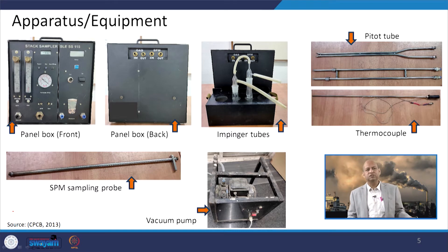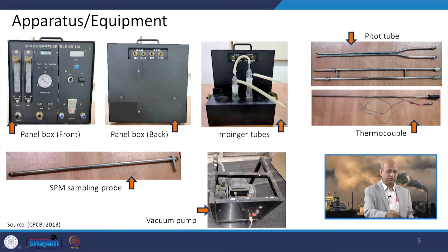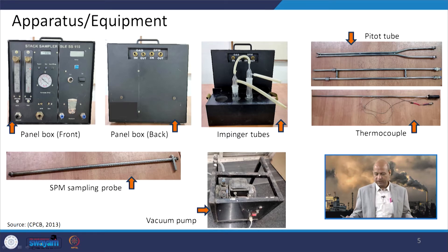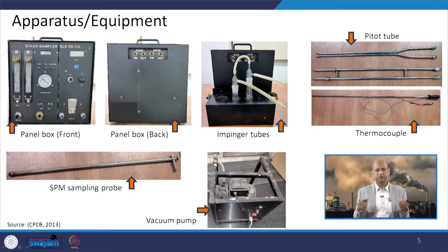Looking at the apparatus used for stack emission monitoring: on the front side of the panel box you can see pressure measurement, pressure difference, and flow rate. On the back side are the inlet and outlet ports where the probes are inserted. Pitot tubes are used for guiding the probes, and thermocouples are also there. Impinger tubes are needed for gaseous components, so that we can measure how much NOx or SO2 is present.